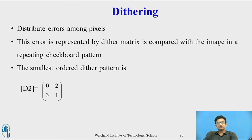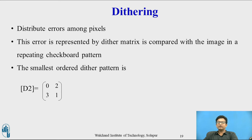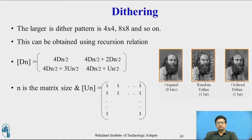Dithering distributes errors among pixels, exploiting spatial integration in our eyes, and displays a greater range of perceptible intensities. This error is represented by a dither matrix which is compared with the image using repeating checkerboard patterns. The smallest order dither pattern is D2: [0, 2; 3, 1]. Larger dither patterns such as 4 by 4 and 8 by 8 can be obtained by a recurrent relationship, where n is the matrix size and Un is the unity matrix.